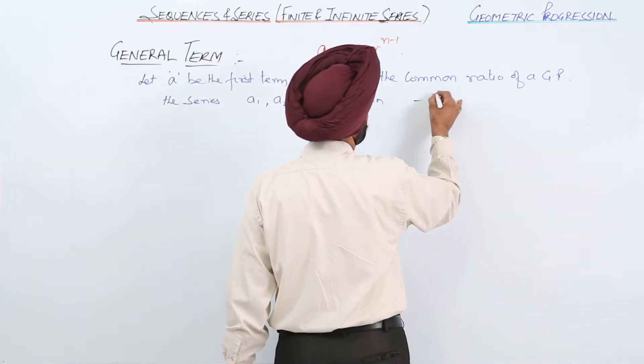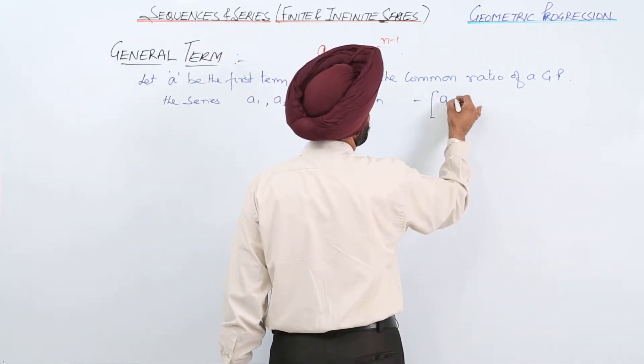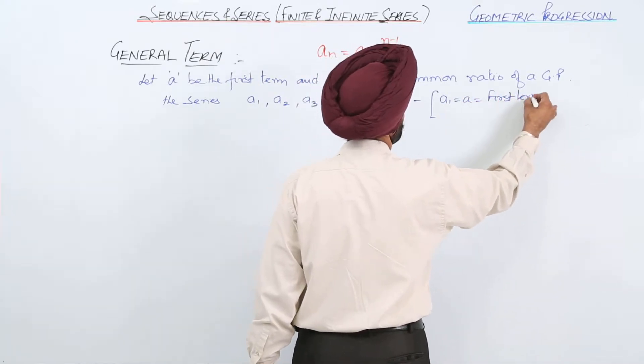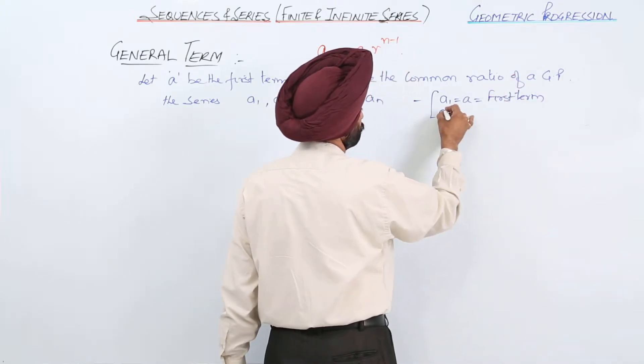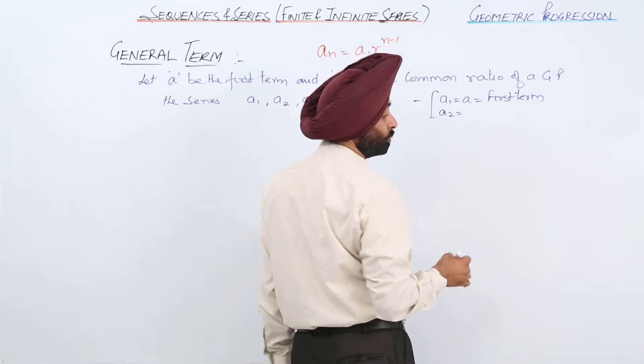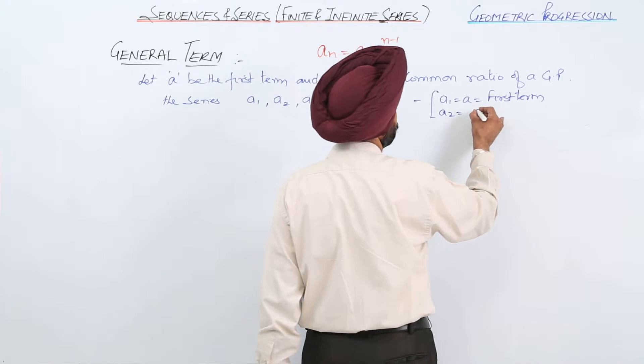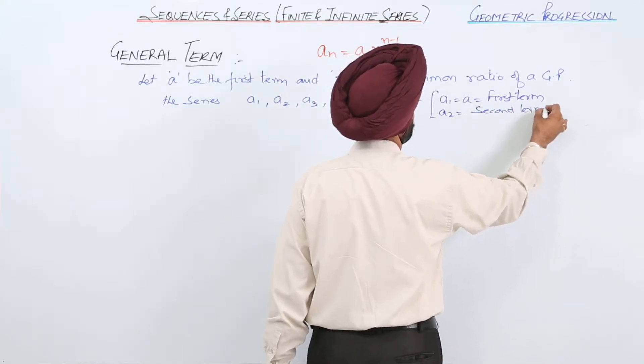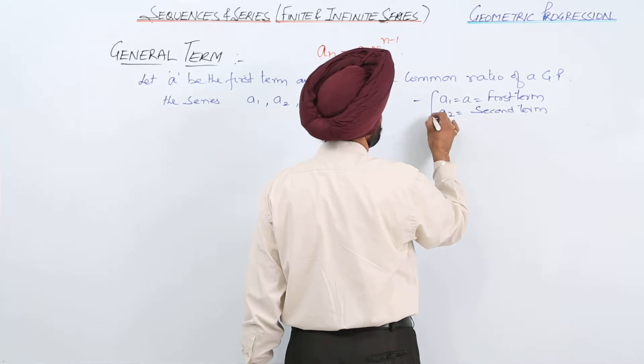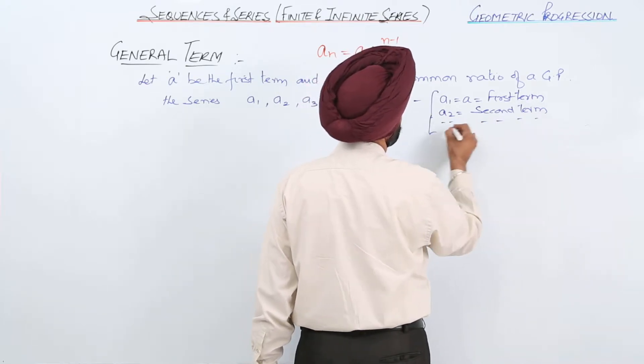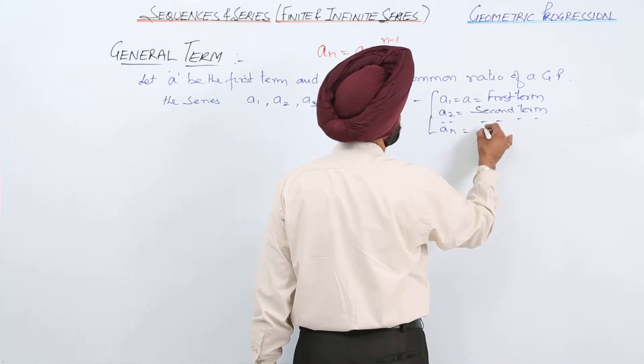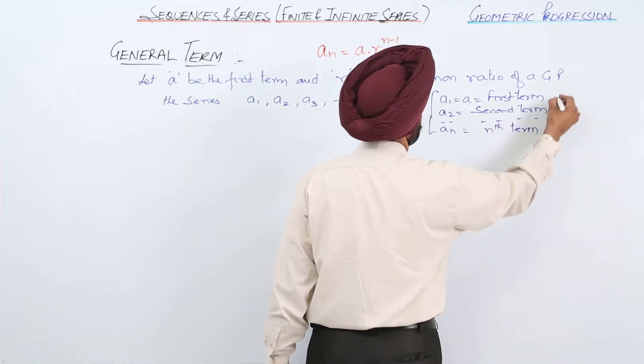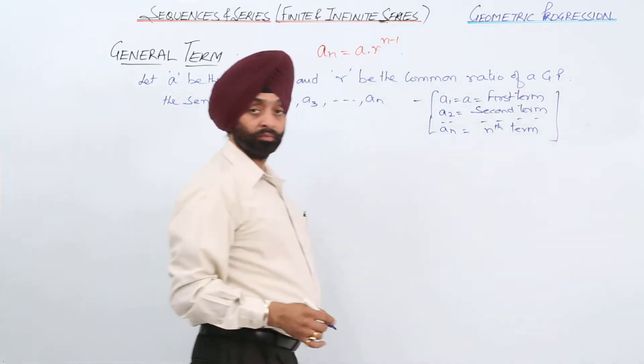What is A1? A1 equals a, which is the first term. A2 is the second term. Similarly, we can go for An, which is the nth term. Is it clear?